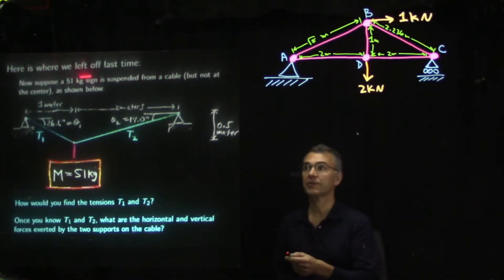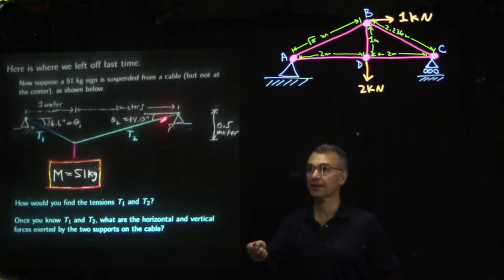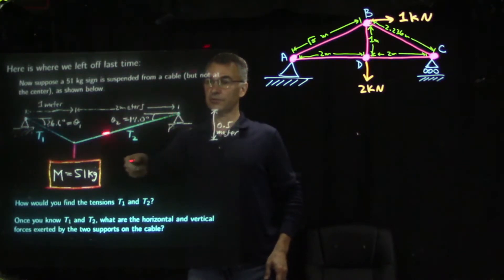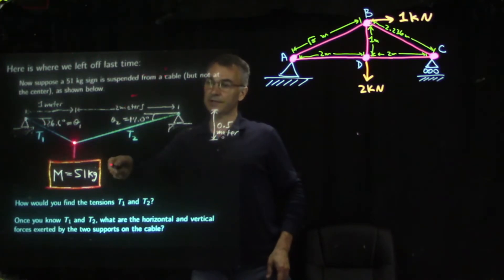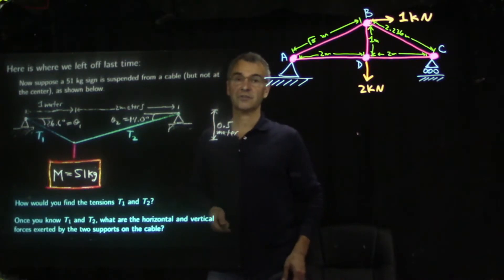Here's where we left off last time. We had a sign of known mass suspended between two cables at slightly different angles. So this tension points along this cable, and this tension points along this cable. The tensions are what we call axial forces — the tension can only point along the axis of the cable. There is a point where T1, T2, and the short segment holding up the sign all meet, making an excellent segue into our discussion of trusses. We call this point a joint.